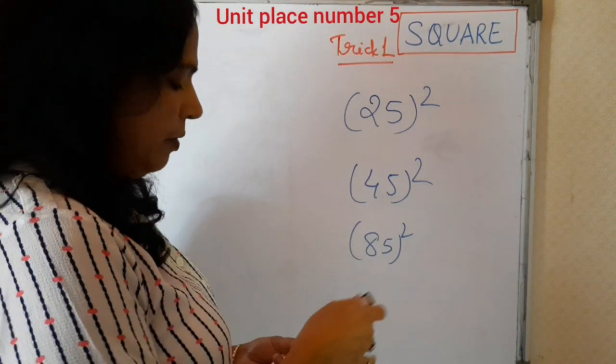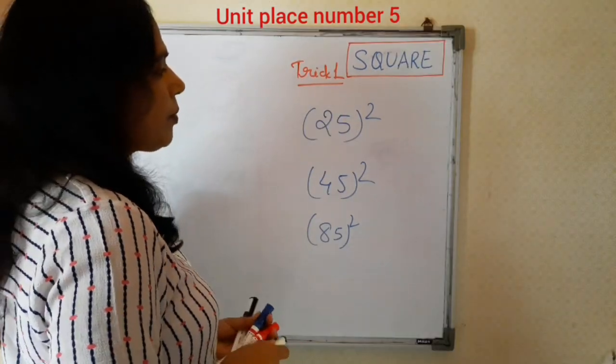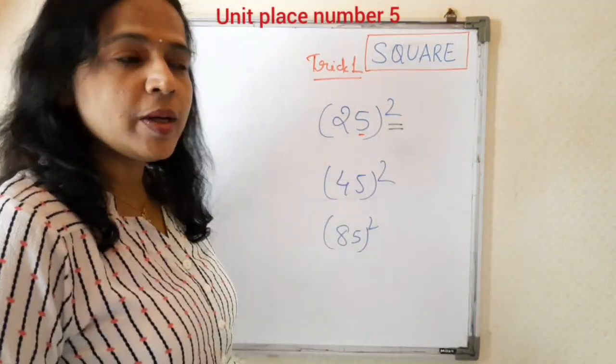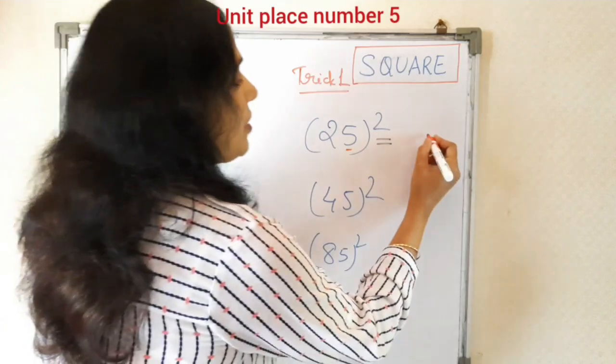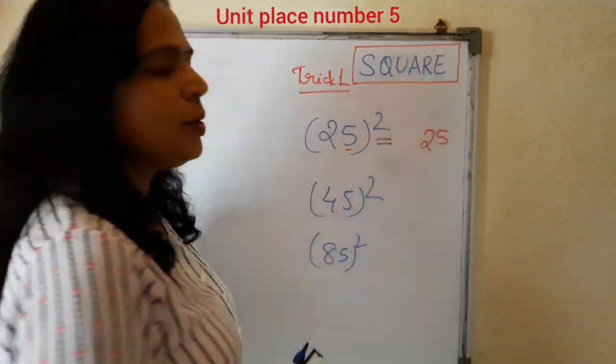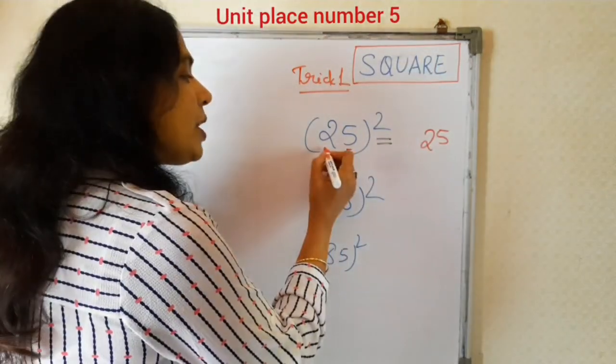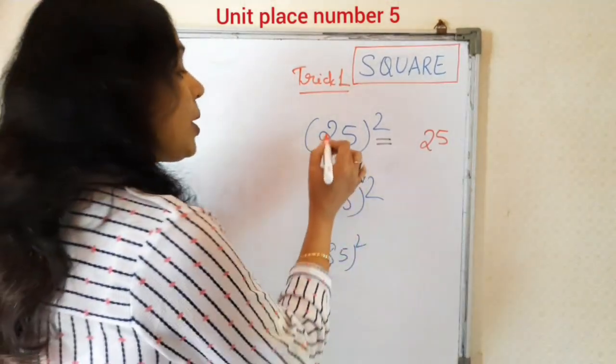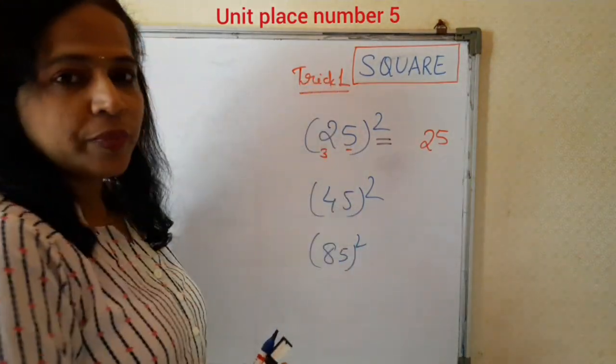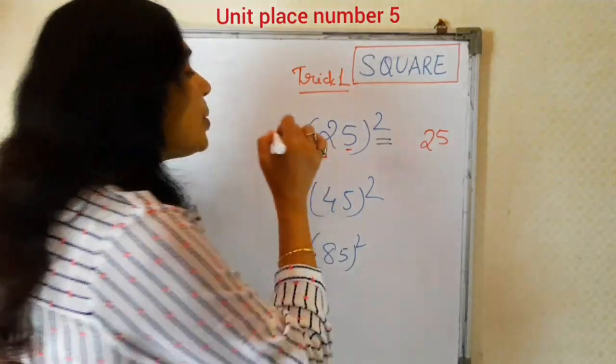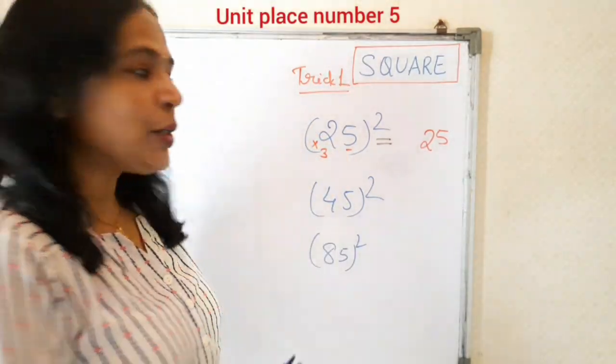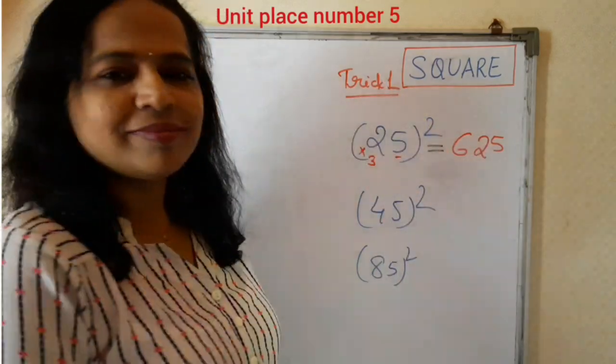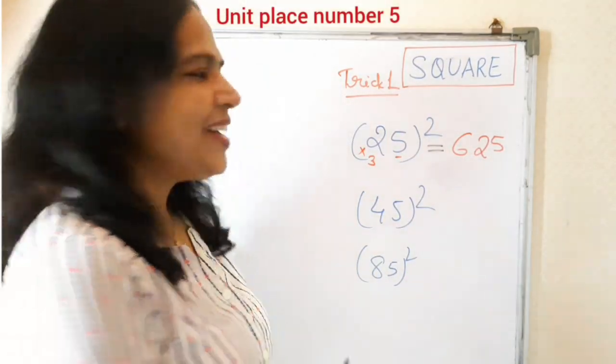Let us see how it works. Step 1, for this, take a square of first unit place number is 5. 5 square is 25. This everybody knows, right? Now, go to the next number and see that digit. 2 next number digit is 3. Then multiply these 2 numbers. 2 into 3 is 6. This is our answer.